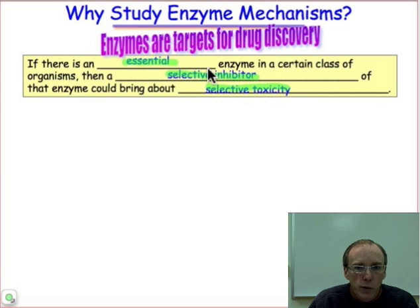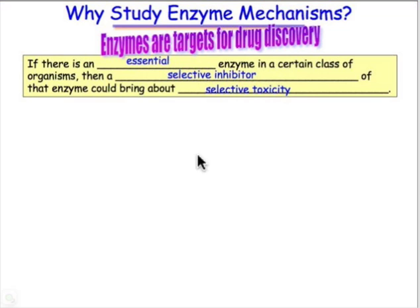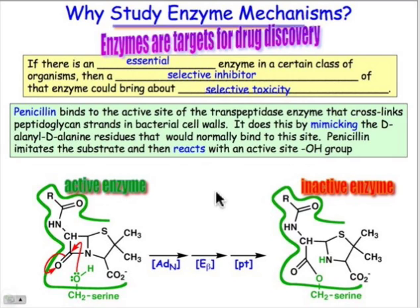In that way, we won't interfere with the natural biochemistry of the human being. A classical example of this is the molecule penicillin, which blocks bacteria cell wall construction and therefore limits the growth of bacteria. We're interested as organic chemists in looking at the molecular level details — we really want to understand the organic chemistry behind how this works.